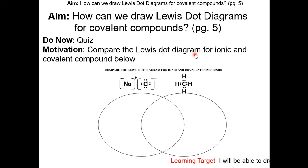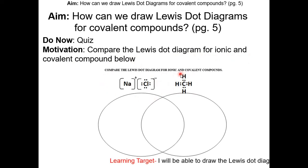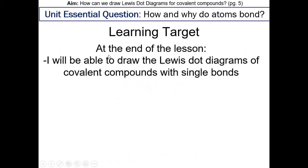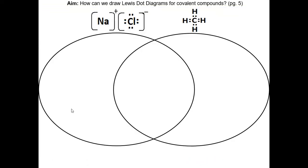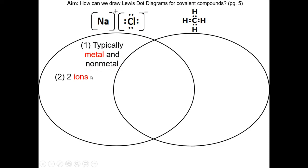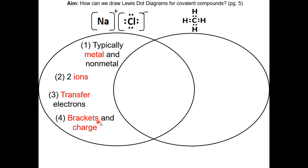Motivation: Compare the Lewis dot diagram for ionic and covalent compounds below. So take a moment to compare these two diagrams. The first one is an ionic compound, NaCl — typically between a metal and a non-metal. It's two ions: sodium is positive, chlorine is negative, and it's showing a transfer of electrons. And there's a bracket and a charge.